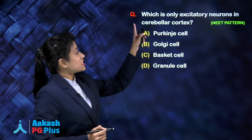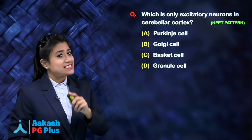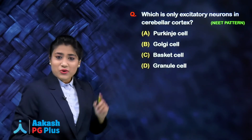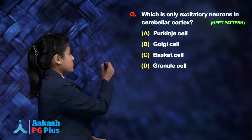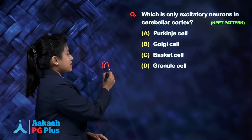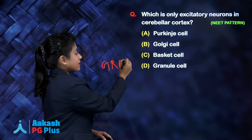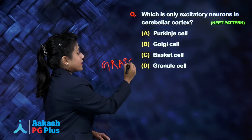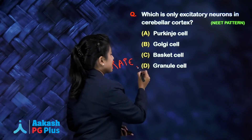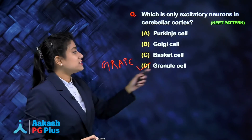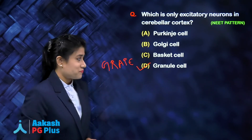Question: which is the only excitatory neuron in the cerebellar cortex? Using the mnemonic GRAPE, the answer is granule cells. The other three options — Purkinje, basket, and stellate cells — are all inhibitory.